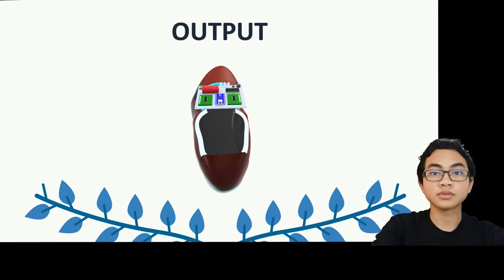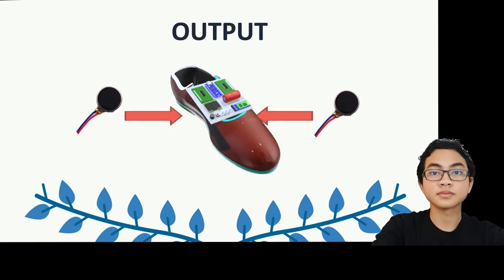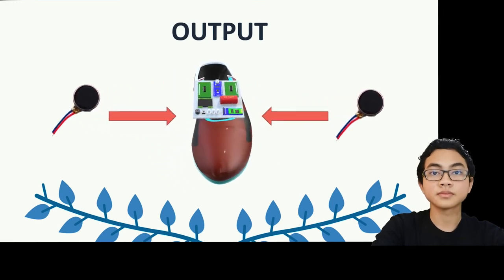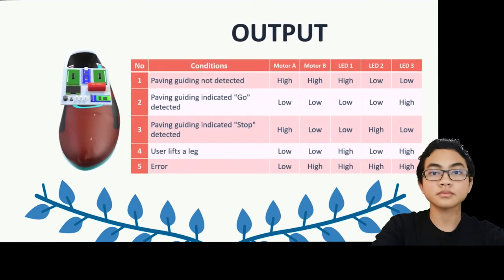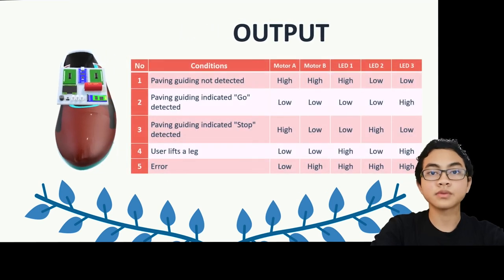The tool provides two outputs. First, inside the shoe there are two vibration motors. Second, there are three LEDs. The vibration motor will vibrate with a different pattern depending on the type of paving stepped on, so the user can feel the difference in vibration for each paving type. Likewise, the LED will light up differently depending on the type of paving stepped on.